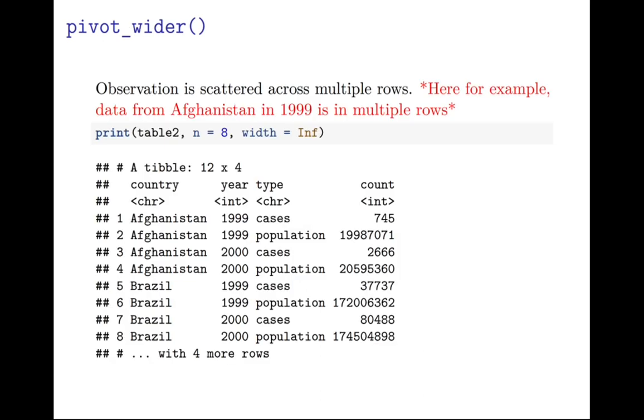The counterpart to pivot_longer is pivot_wider. You want to use this function when observations are scattered across multiple rows. Here, for example, the data from Afghanistan in 1999 is in multiple rows. You see rows 1 and 2, you have two different types - both cases and population - and those both have values. So you really want to make that into multiple columns.